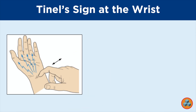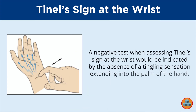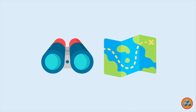Finding 3: Negative Tinel sign at the wrist. A negative test when assessing Tinel sign at the wrist would be indicated by the absence of a tingling sensation extending into the palm of the hand. This image depicts a positive Tinel sign at the wrist. Now, let's explore each option using the discussed clinical findings.